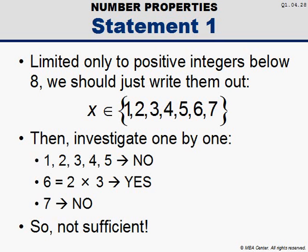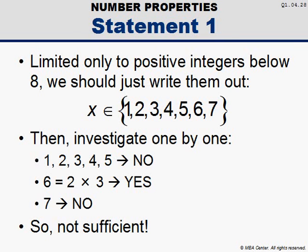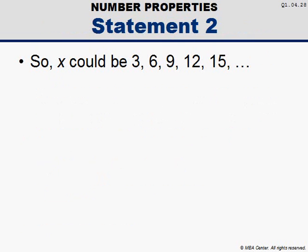Now then, let's get back to the problem so that we can look at statement 2. Statement 2 tells us that x is a multiple of 3. That means that x, as a positive integer, might be 3, 6, 9, 12, 15, or so on.